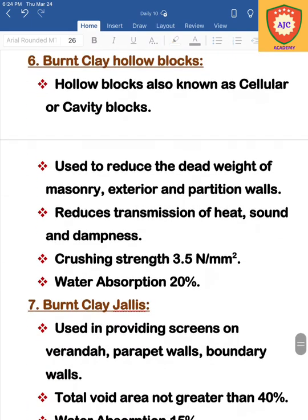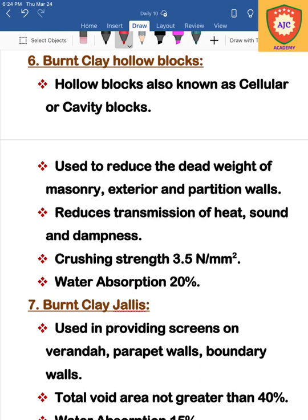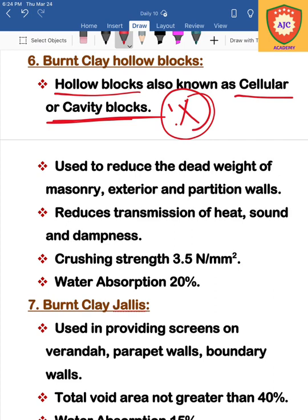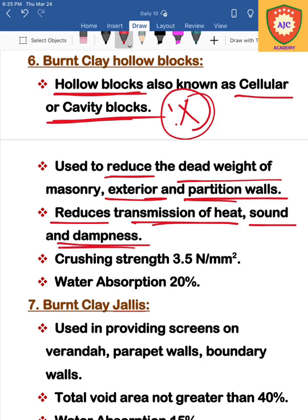The next type is burnt clay hollow blocks bricks. Hollow block bricks are also called cellular bricks or cavity blocks. They are used to reduce the weight of a building and can be used in exterior walls or partition walls. They also reduce heat, sound, and dampness. Compressive strength is 3.5 N/mm² and water absorption is 20%.